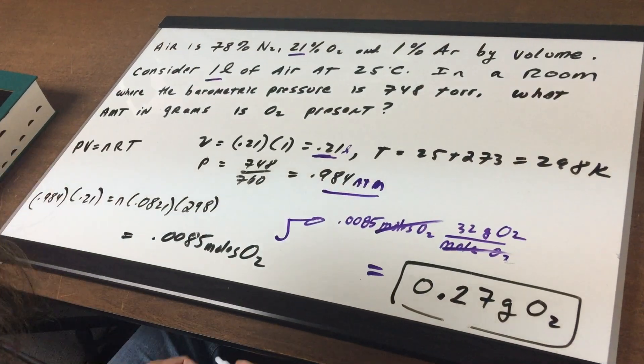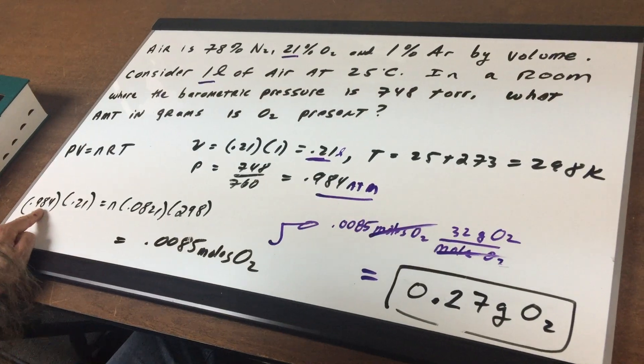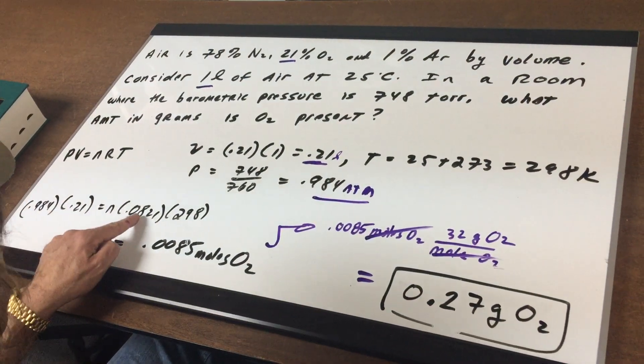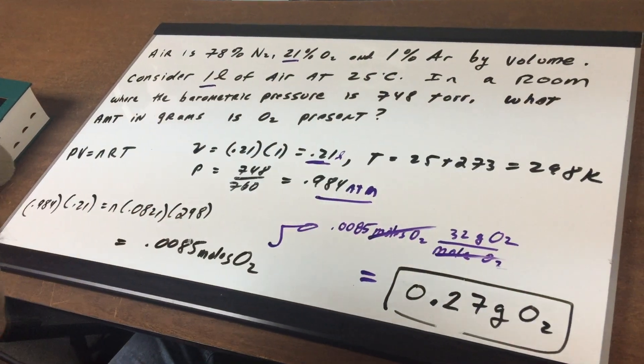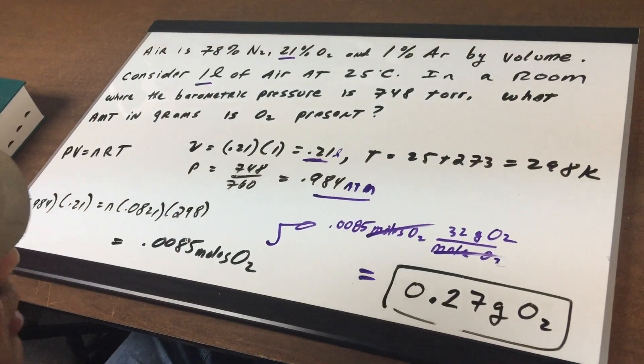Now I plug into PV equals NRT. The pressure is 0.984 atmospheres, the volume is 0.21 liters, R is given to you on the DAT, and T is in Kelvin. That gives me 0.085 moles of oxygen.